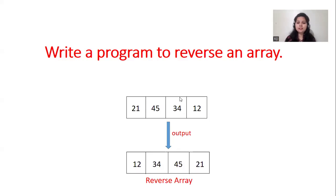Let's consider this is our input array with elements 21, 45, 34, 12. Our output array should be a reverse array like 12, then 34, then 45 and 21.